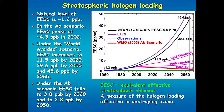Let me show you a little bit about stratospheric halogen loading — you should already be very familiar with this having just heard Paul's talk. Here are observations of equivalent effective stratospheric chlorine, which is an aggregation of the chlorine and bromine in the stratosphere effective in depleting ozone. The blue curve is observations, and the red curve is what we think is going to happen — exactly what Paul showed — going out to about 2070, under the AB scenario of WMO. That's what we expect will happen under the Montreal Protocol.